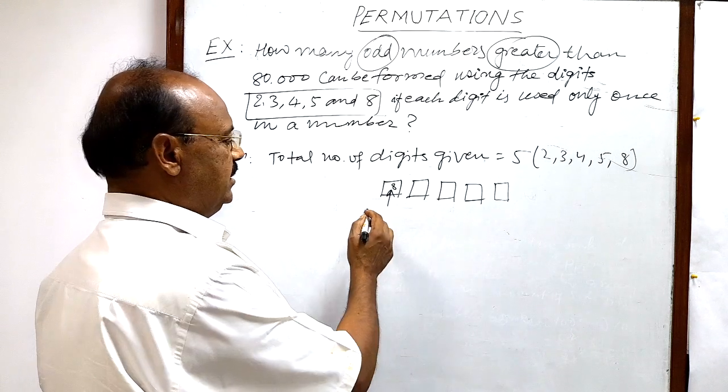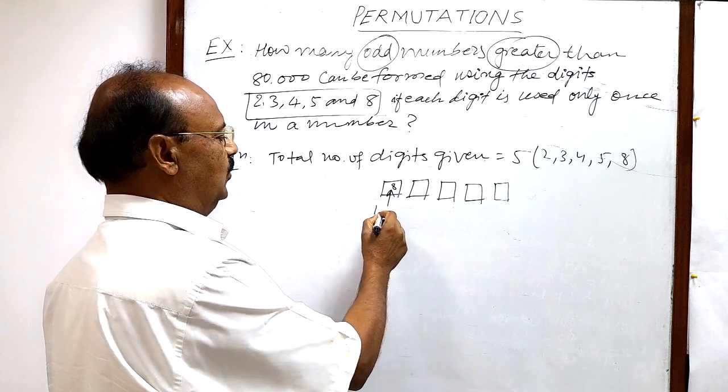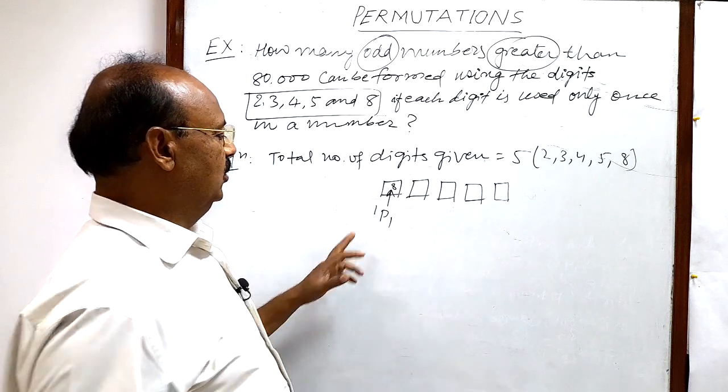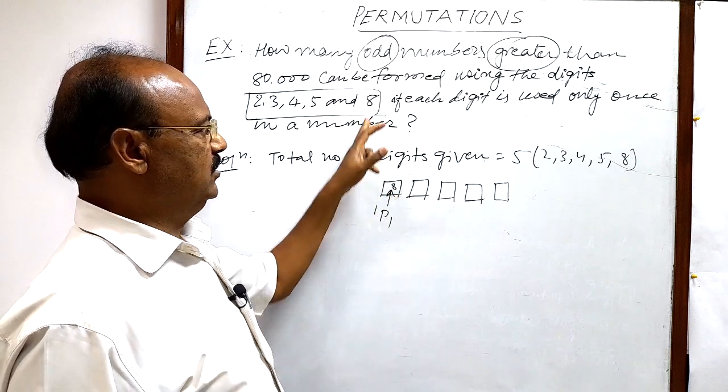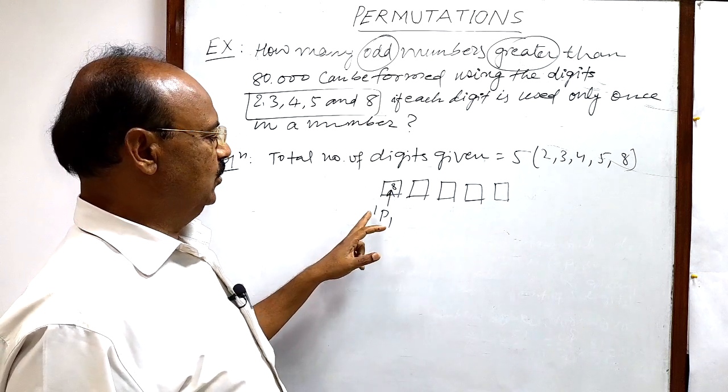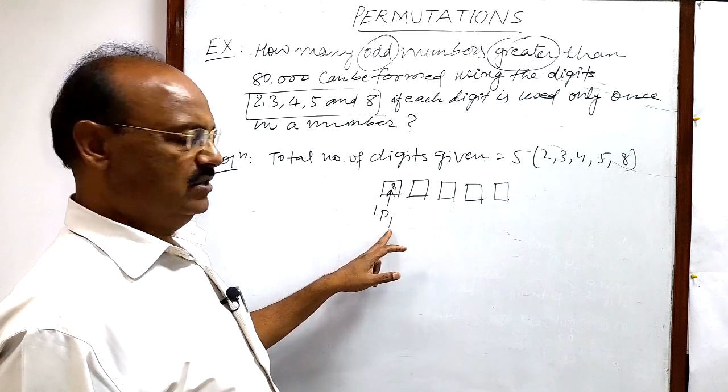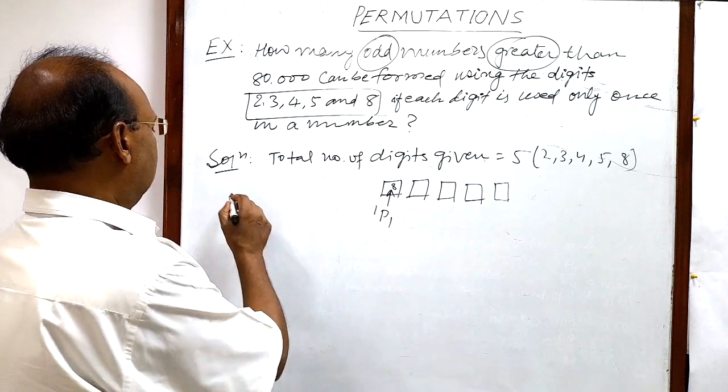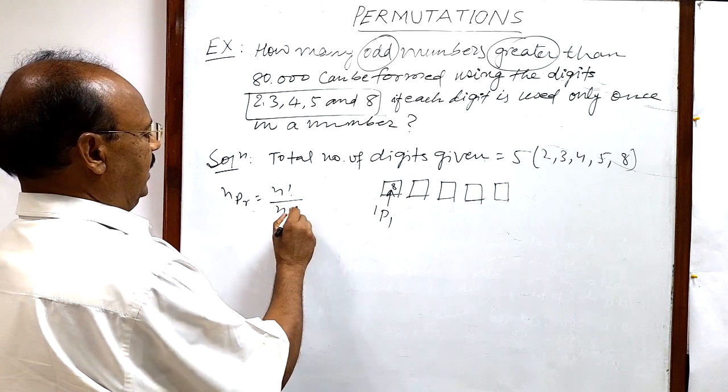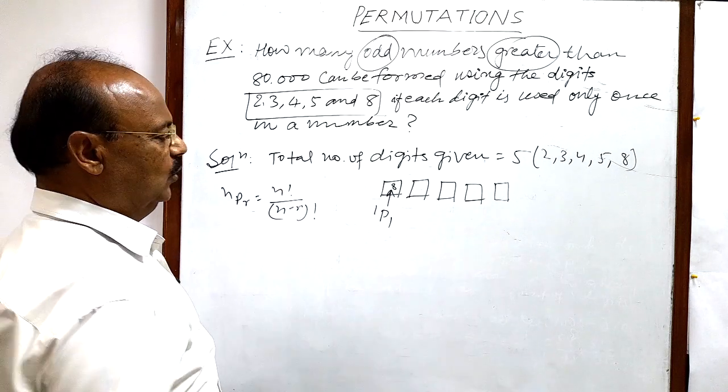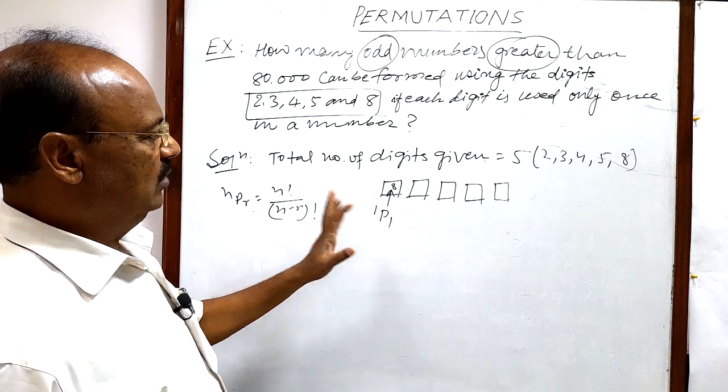So we will write here: number of ways will be 1P1. Total number of objects that has to be selected for this place is 1, this 8. And so n is equal to 1 and p is equal to 1. Here you are using the formula nPr. nPr is n factorial by n minus r whole factorial. So this is 1P1.